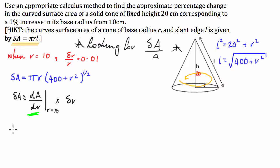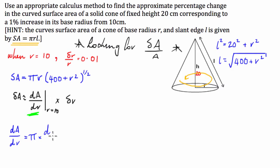We're looking for dA/dR. To make it easier, I'll take pi out the front, so this equals pi times the derivative of R times (400 plus R squared) to the half. Hopefully you're aware of the product rule that we can use for this.